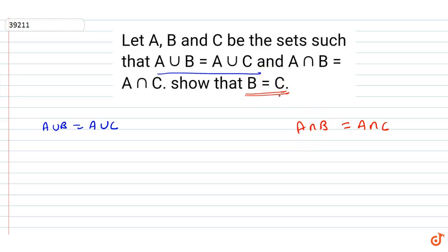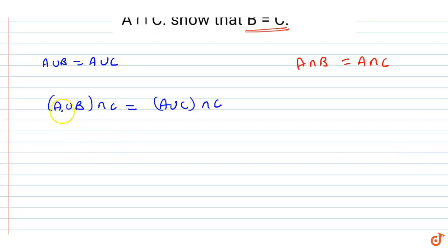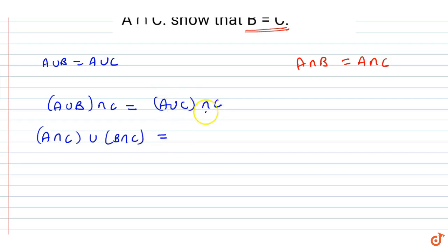We have to prove that B is equal to C. We start with A union C, and we distribute the intersection with C here, since A union C intersected with C gives us C.